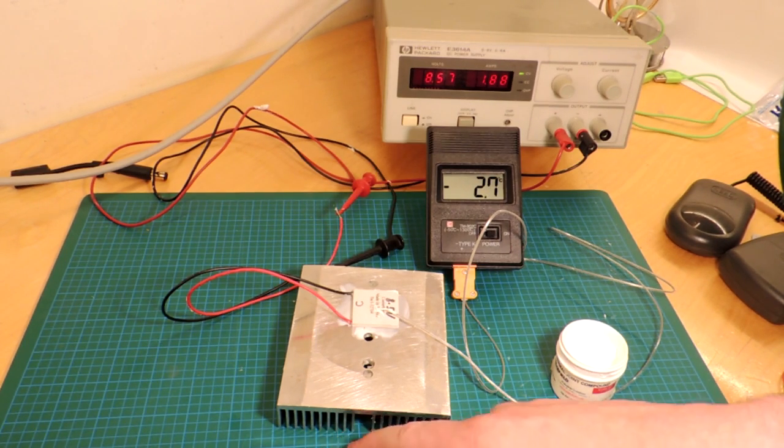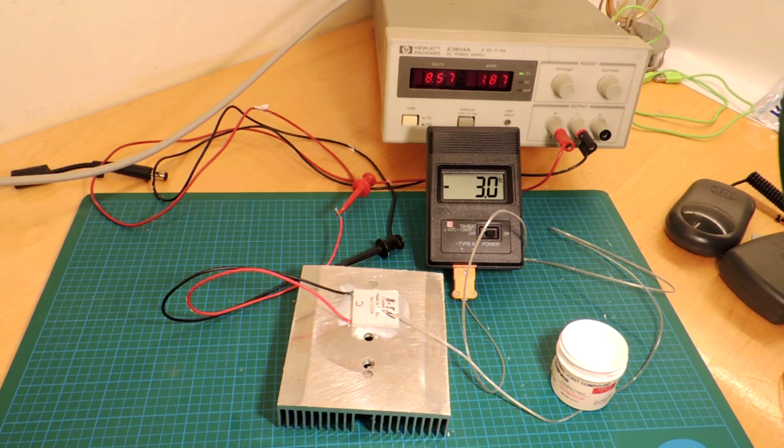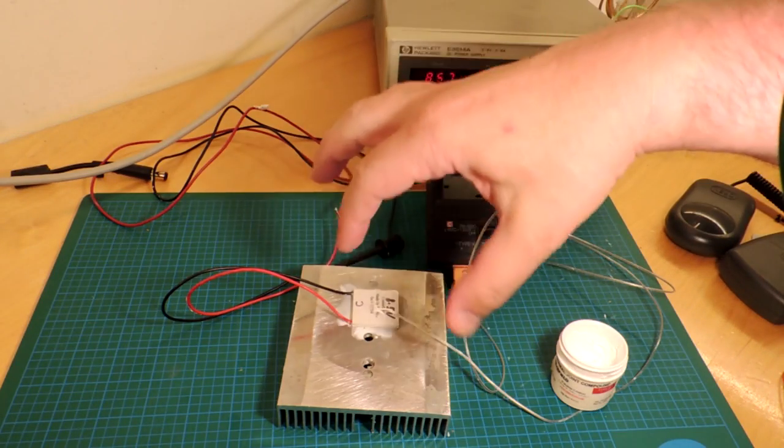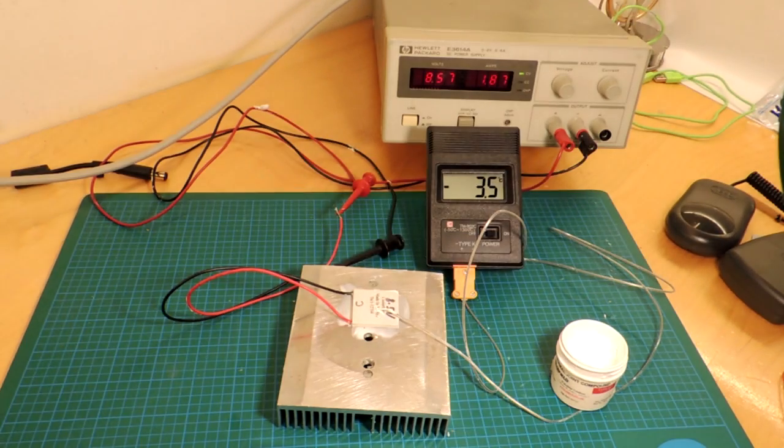Obviously heat can't be rejected very efficiently, and if I wait long enough, eventually the Peltier cooler will warm this piece of aluminum up to the point where it's not a really effective heat sink.